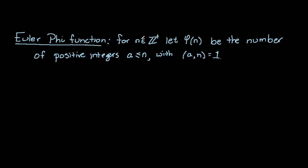For n, a positive integer, let phi of n be the number of positive integers a, where a is less than or equal to n, with the GCD of a and n equal to 1.